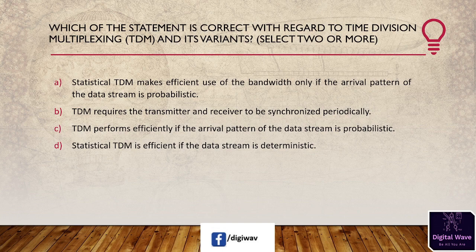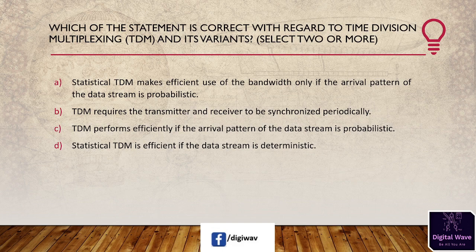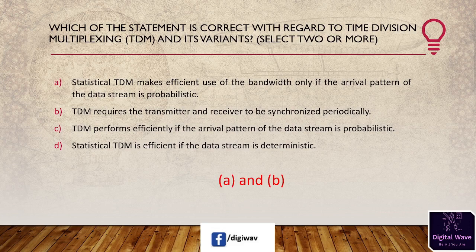Next question: which statements are correct with regard to time division multiplexing (TDM) and its variants? Options are: (A) statistical TDM makes efficient use of bandwidth only if the arrival pattern of the data stream is probabilistic; (B) TDM requires the transmitter and receiver to be synchronized periodically; (C) TDM performs efficiently if the arrival pattern of the data stream is probabilistic; (D) statistical TDM is efficient if the data stream is deterministic. The answer is A and B — both are correct.